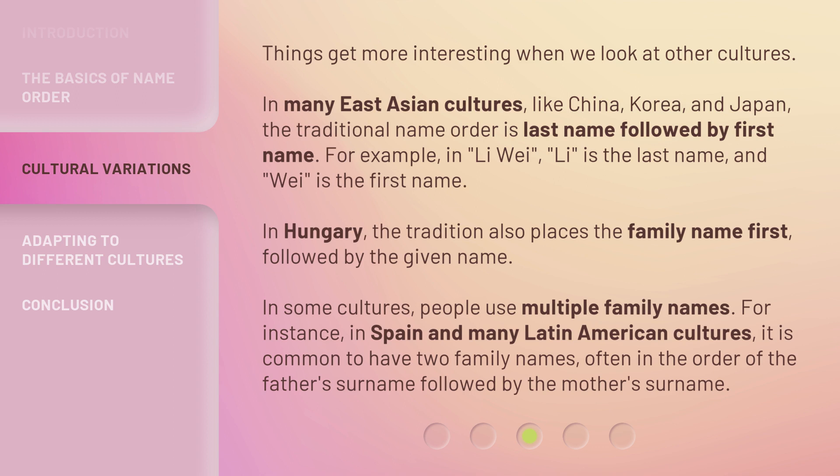In some cultures, people use multiple family names. For instance, in Spain and many Latin American cultures, it is common to have two family names, often in the order of the father's surname followed by the mother's surname.